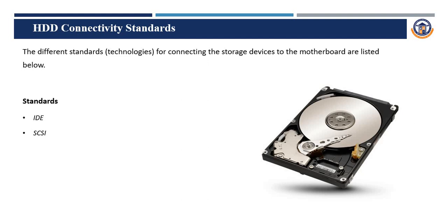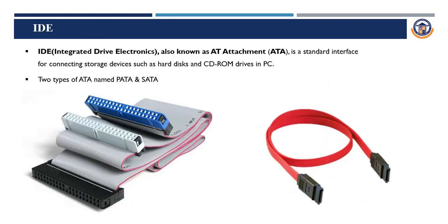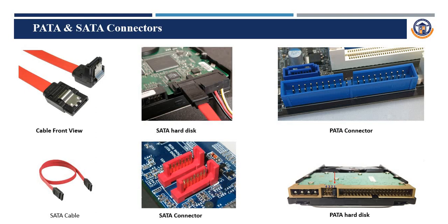Next is the hard disk connectivity standard. There are two standards: IDE and SCSI. IDE stands for Integrated Drive Electronics, also known as ATA attachment — a standard interface connecting storage devices such as hard disks and CD-ROM drives. There are two types of ATA: PATA and SATA. Nowadays, most devices use SATA cables, though some older PCs and organizations still use PATA cables. We can see the front view of a SATA cable, its connection to the hard disk, and the PATA connector on the motherboard.